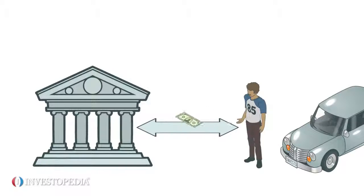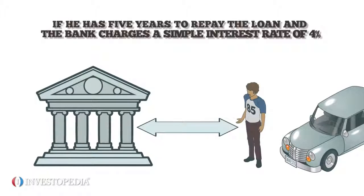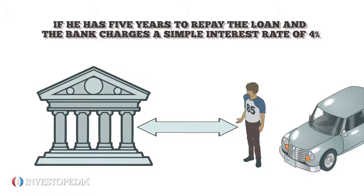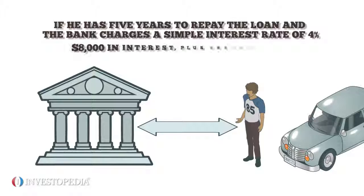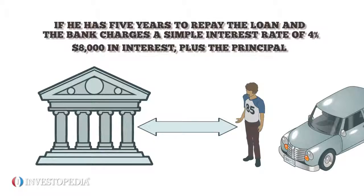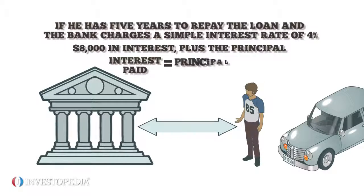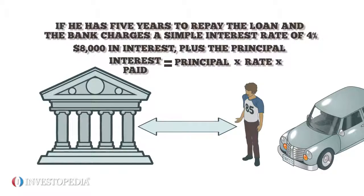Joe borrows $40,000 from a bank to buy a new car. If he has five years to repay the loan and the bank charges a simple interest rate of 4%, Joe will pay $8,000 in interest plus the principal. To calculate the interest paid, multiply the principal by the interest rate and then by the time of the loan.